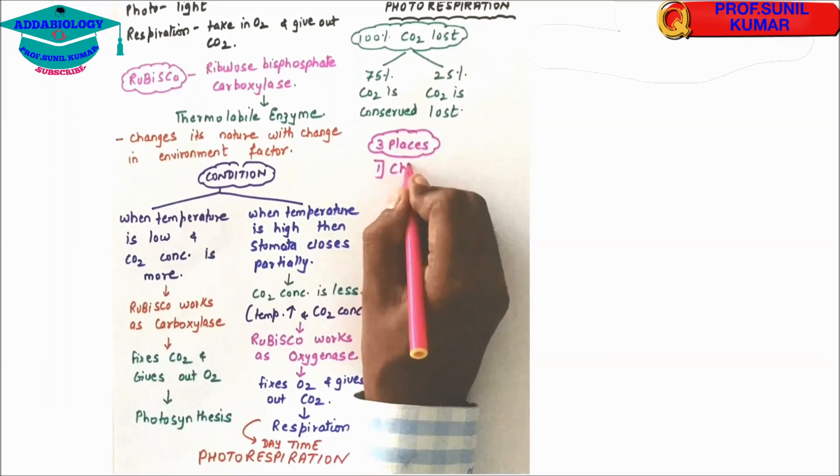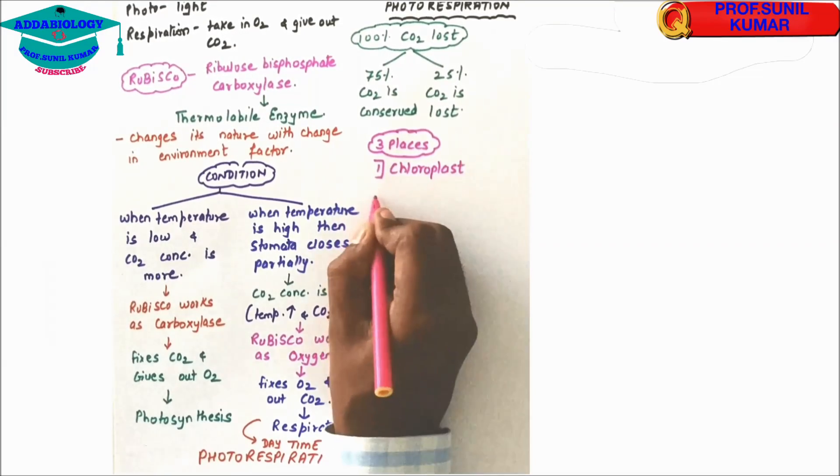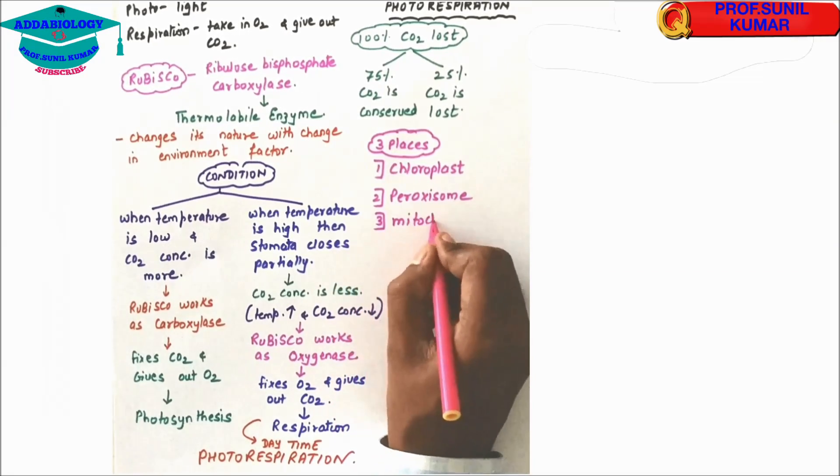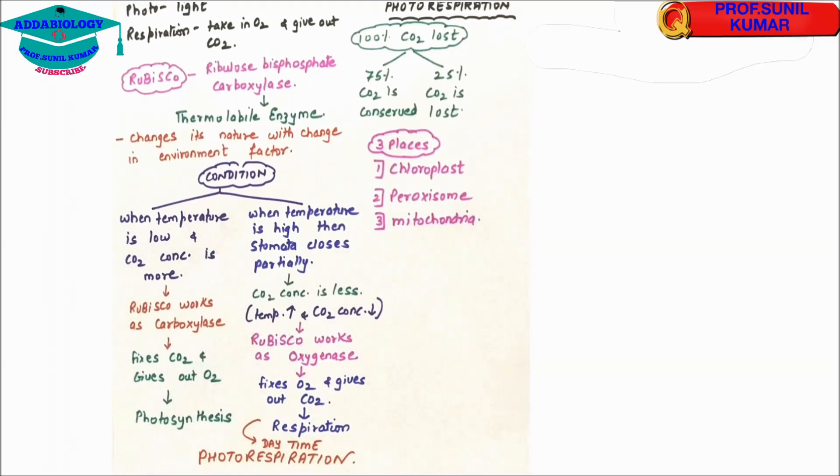The photorespiration takes place in three cell organelles: number one chloroplast, number two peroxisome, and number three is mitochondria. So these are the three cell organelles involved in photorespiration.